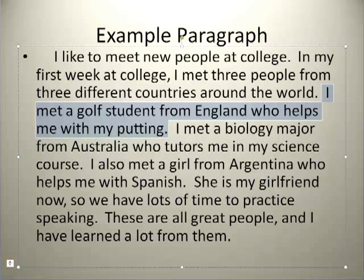Here is one person. We've become specific here. I met a golf student from England who helps me with my putting. So we want some specific examples of the kinds of people he meets and why he feels it's a good thing to meet these people. He's met someone from a foreign country, and we see that he's established some sort of relationship with this person around a golf game. This golfing student, perhaps here on a scholarship to play golf, is helping this other student with his golf game.